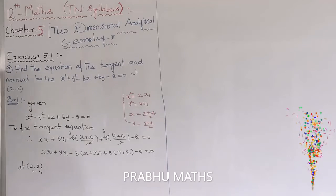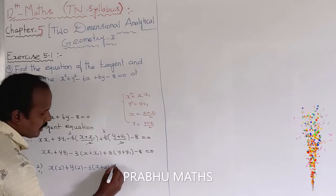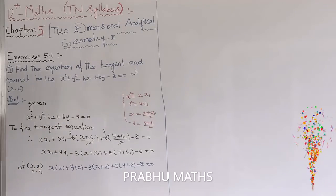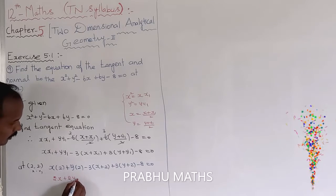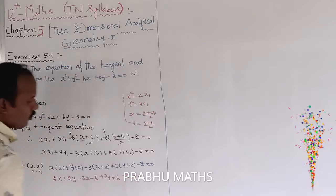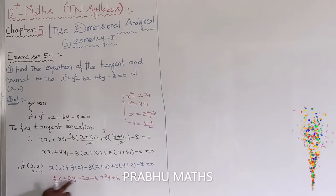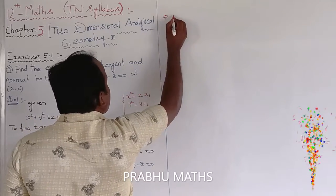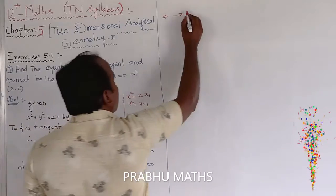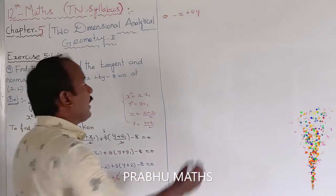At the point (2, 2), x₁ = 2 and y₁ = 2. Substituting: x·2 + y·2 - 3(x + 2) + 3(y + 2) - 8 = 0, which gives 2x + 2y - 3x - 6 + 3y + 6 - 8 = 0.